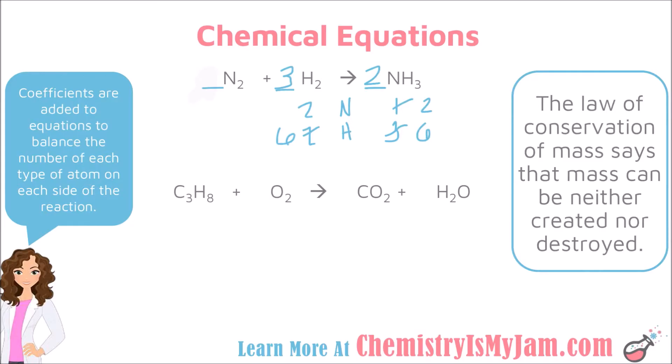It is a very common situation to have a two for an atom on one side and a three on the other side. When that happens, you need to go up to a six — multiply each side by whatever it needs to reach six.